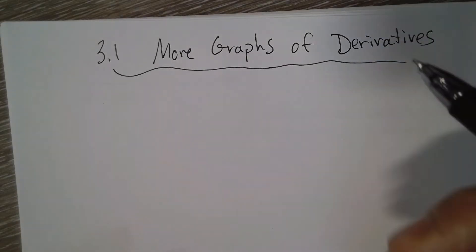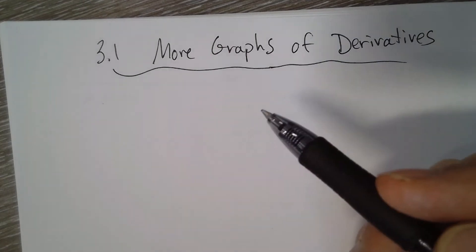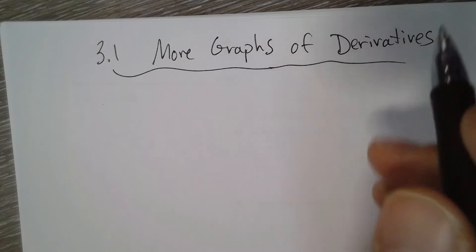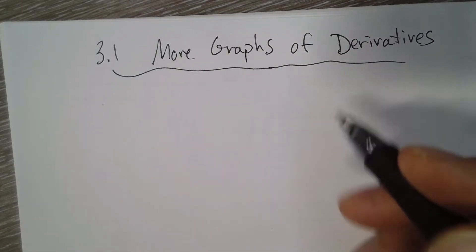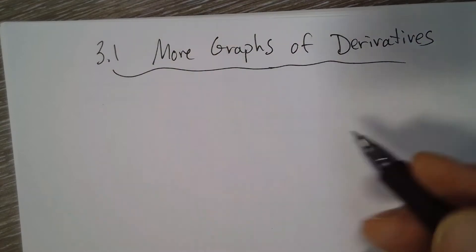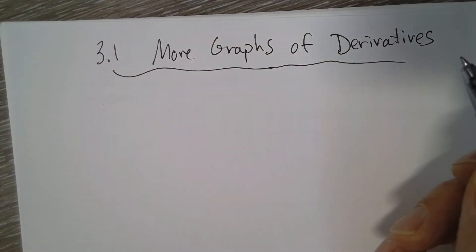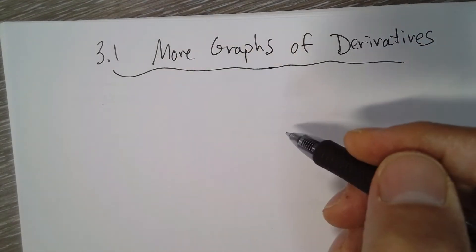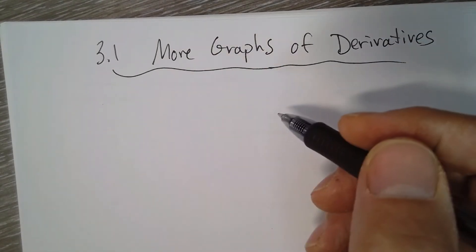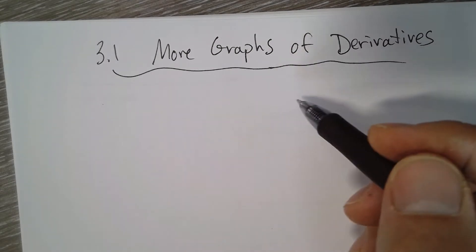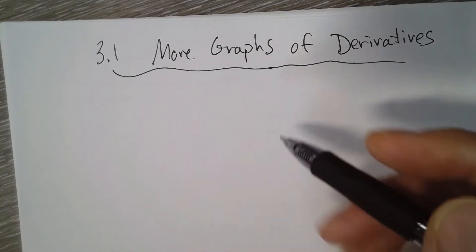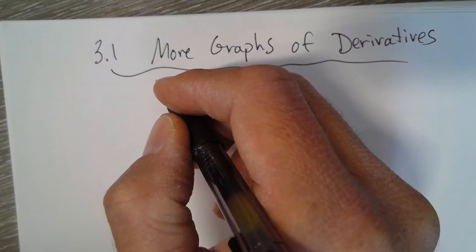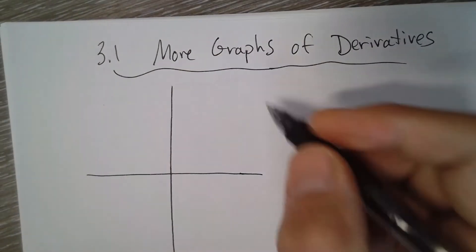Comparing graphs of original functions and derivatives is a pretty difficult concept and it just takes more repetition to hopefully sink in. I'm going to give you a few more examples of finding the graph of a derivative from the original, and also a couple examples of finding the original from the derivative. Let's start one way — say I have a graph of f of x.